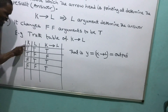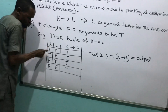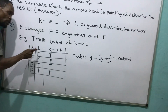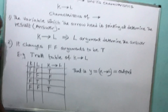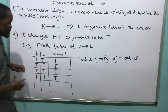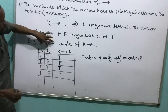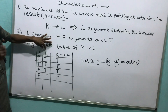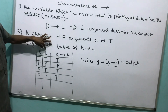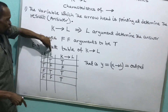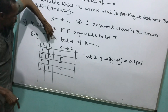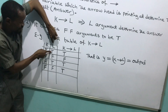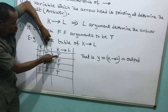When I set K down, what does K produce? True, true, false, false. Then I set L down, which is: true, false, true, false. Now look at the judgment. The characteristic of single implication — the one arrow is pointing at determining the results. Which one is the arrow pointing at here? L. I have to hold my hand at L. What is the value of L here? True — the answer would be true. What is the value of L here? False — the answer would be false. What is the value of L here? True — the answer would be true.